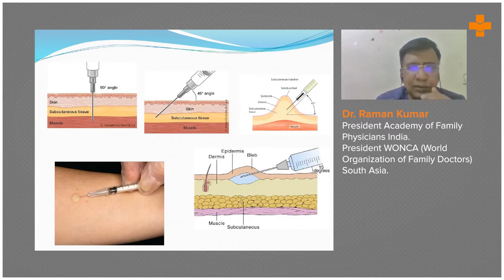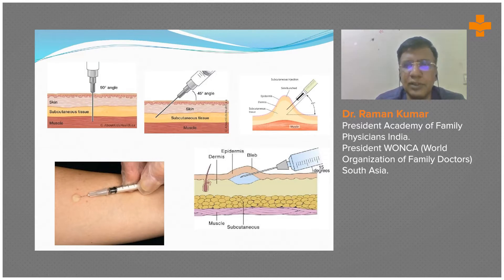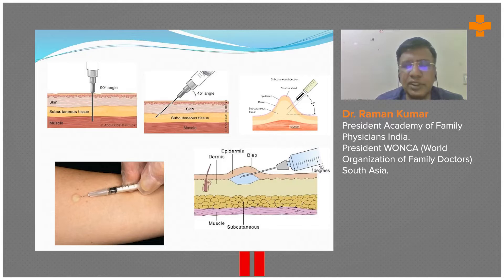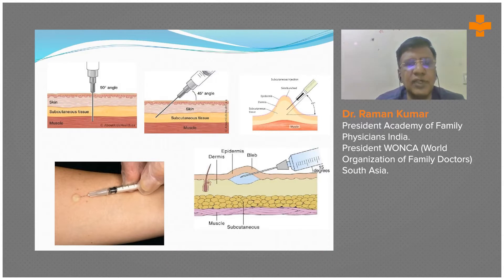Intramuscular injection is commonly given in the gluteal region and deltoid region. Many times I have seen staff give it at an angle of 45 or 60 degrees, but always remember that an IM injection should be given at 90 degrees from the skin. Subcutaneous is given at an angle of 45 degrees.